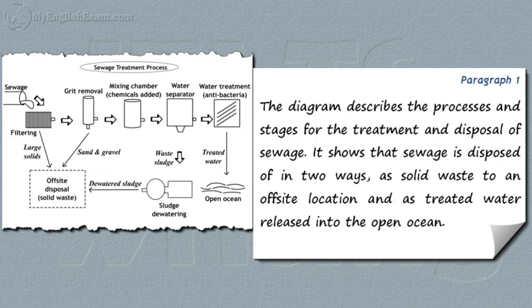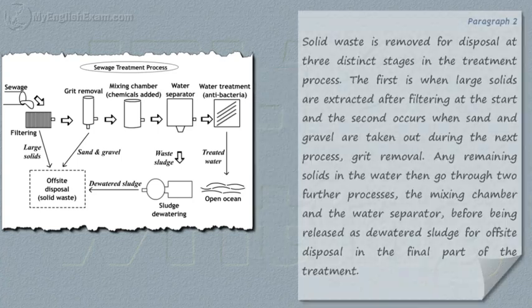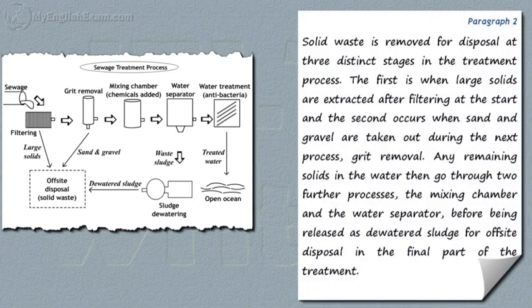The diagram describes the processes and stages for the treatment and disposal of sewage. It shows that sewage is disposed of in two ways: as solid waste to an off-site location, and as treated water released into the open ocean. Solid waste is removed for disposal at three distinct stages in the treatment process.